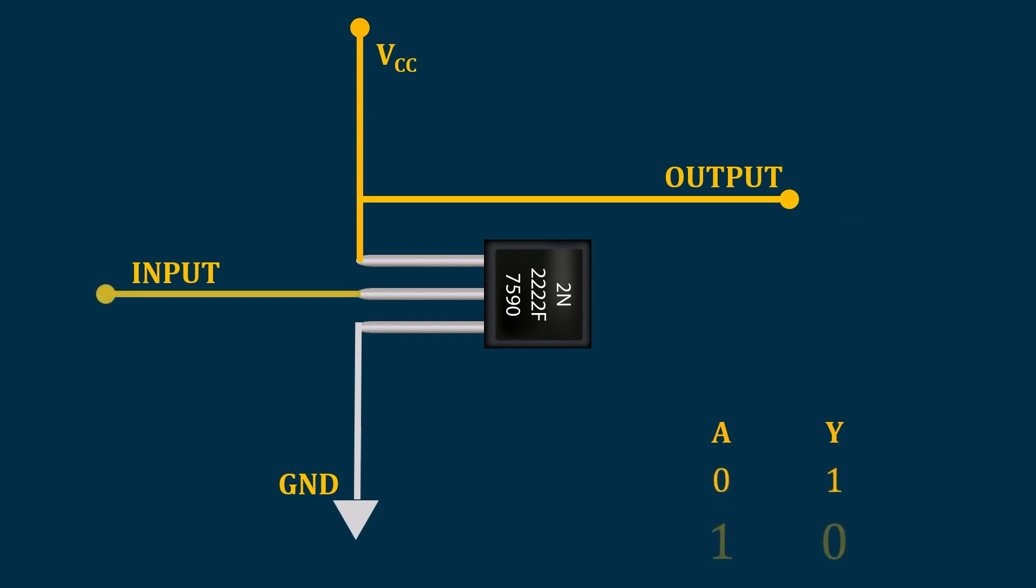Now instead of 0, what happens when we give 1 as input? So when there is 1 as input, the transistor works as a switch and that switch gets turned on. When the switch gets turned on, the voltage we get across transistor ideally it should be 0.